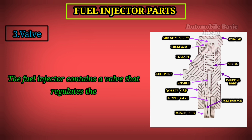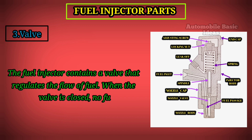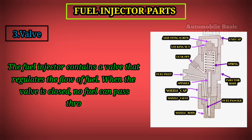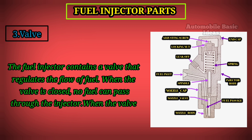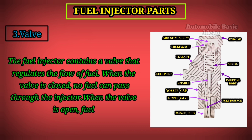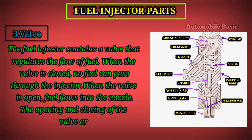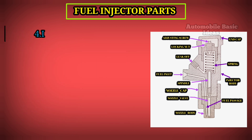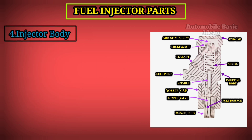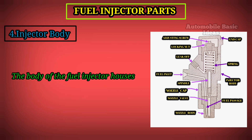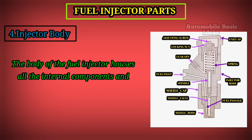3. Valve. The fuel injector contains a valve that regulates the flow of fuel. When the valve is closed, no fuel can pass through the injector. When the valve is open, fuel flows into the nozzle. The opening and closing of the valve are controlled by the actuator.